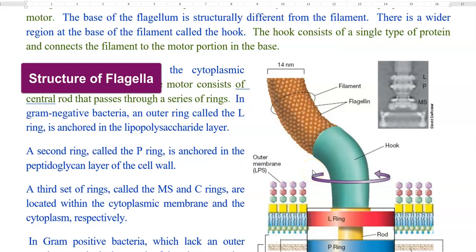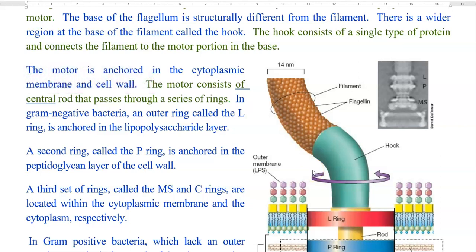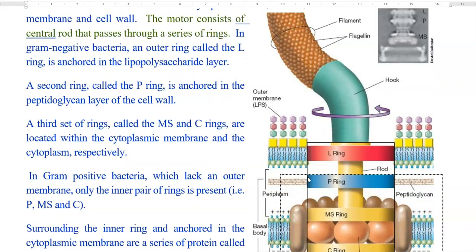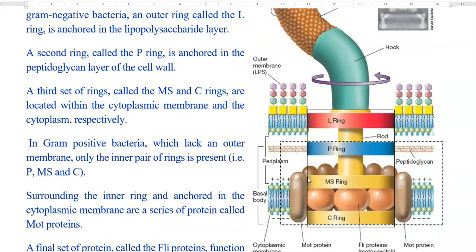Now we look at the structure of the flagellum. The base of the flagellum is structurally different from the filament. There is a wide region at the base of the filament referred to as the hook. The hook consists of a single type of protein and connects the filament to the motor portion present at the base of the flagella. The motor is anchored in the cytoplasmic membrane and cell wall, and consists of a central rod that passes through a series of rings: the L ring, P ring, and MS ring. In gram negative bacteria, the outer L ring is anchored to the lipopolysaccharide layer, the P ring is anchored to the peptidoglycan cell wall, and the MS and C rings are located within the cytoplasmic membrane and cytoplasm.